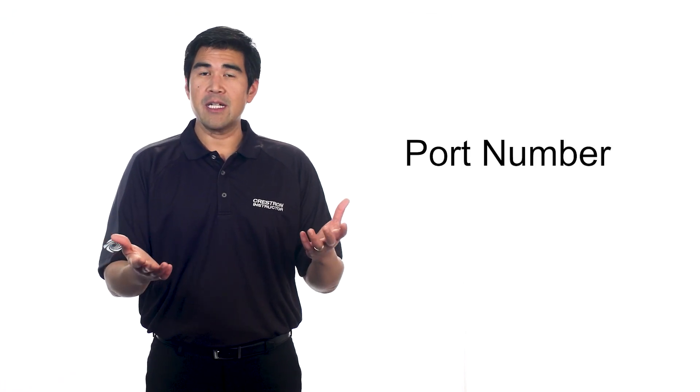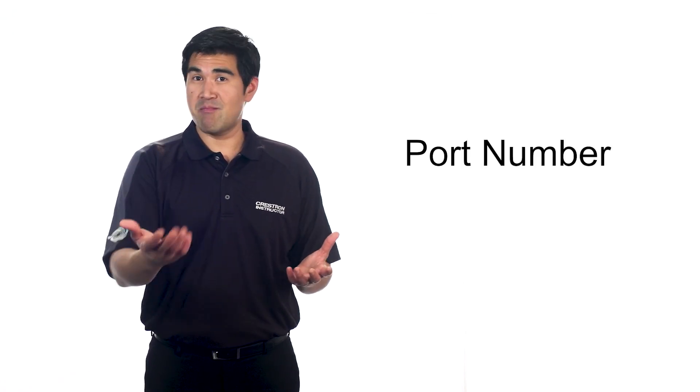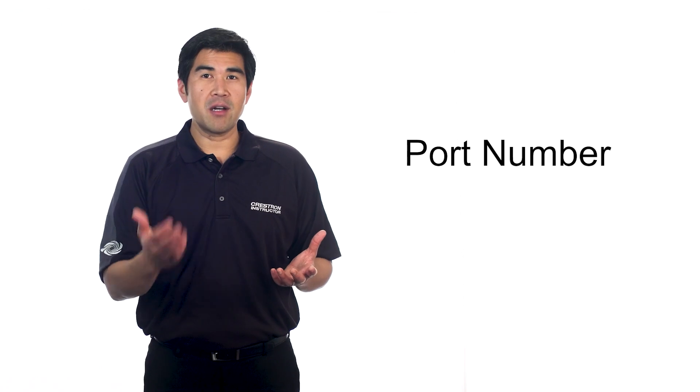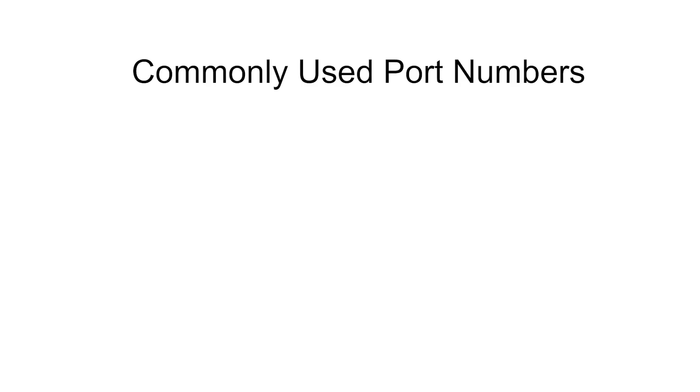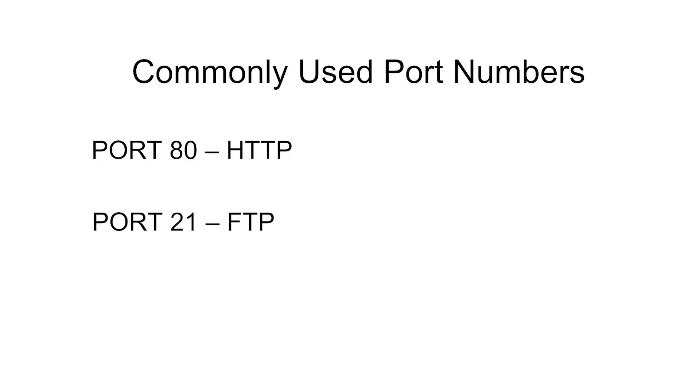Another consideration is the Ethernet port that will be used. Once information is delivered to a device by its IP address, it's necessary to give the information to the right application. In the postal address comparison used earlier, the Ethernet port could be the name of the addressee — once the letter arrives at the house, you must ensure the right person reads it. Commonly used ports include port 80, which is for HTTP (Hypertext Transfer Protocol) or internet traffic, and port 21, which is a common file transfer protocol.